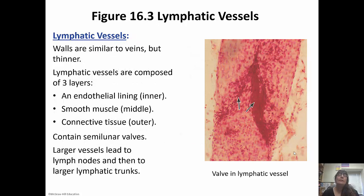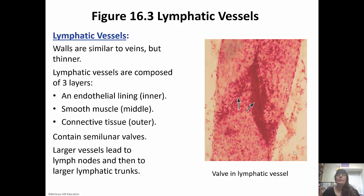Lymphatic vessel walls are similar to veins, but actually even thinner. There are three layers: the inner layer is composed of an endothelial lining, the middle layer is smooth muscle — though not a lot — and the outer layer is connective tissue, which holds it together and gives it strength. Because there's not a lot of smooth muscle, they rely on other mechanisms to move lymph, just like veins do. They have semilunar valves to help prevent backflow, and larger vessels lead to lymph nodes, then to the lymphatic trunks.